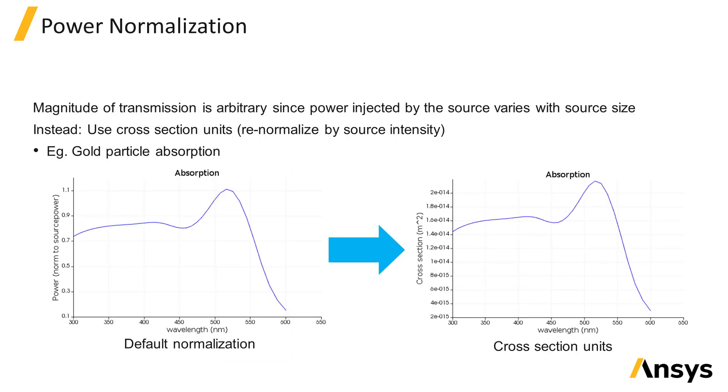Since the total field scattered field source injects a plane wave over a finite span, the default normalization method where the transmission result from the monitors is normalized by the amount of power injected by the source leads to arbitrary values. Because the power injected by the source depends on the size of the plane wave injected in the total field region of the source, it is usually more physically meaningful to normalize transmission results by the source intensity.